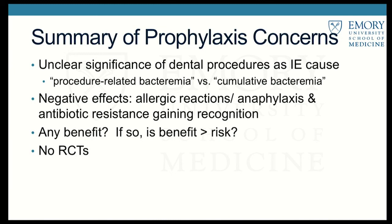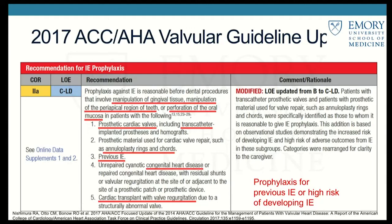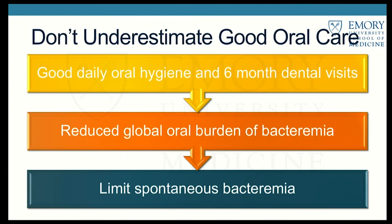Given these concerns, we now restrict antibiotic prophylaxis to patients undergoing more significant dental procedures such as manipulation of gingival tissue or perforation of oral mucosa, and only for those at high risk for endocarditis — patients with prosthetic heart valves, previous endocarditis, congenital heart disease, or transplant with valvulopathy. Most importantly, we should strongly recommend that patients practice daily good oral hygiene and keep up with six-month dental visits to reduce the global oral burden of bacteremia.